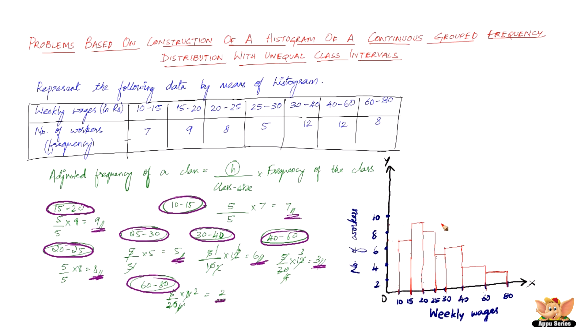The histogram of a continuous grouped frequency distribution, but with unequal class intervals. So this is how we solve the problem based on construction of a histogram of a continuous grouped frequency distribution with unequal class intervals.